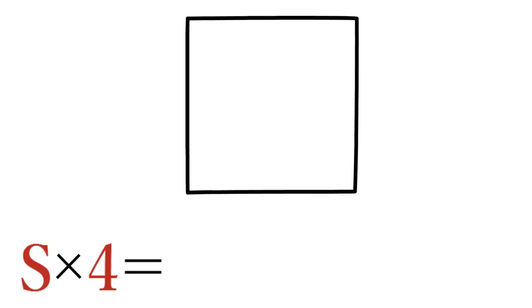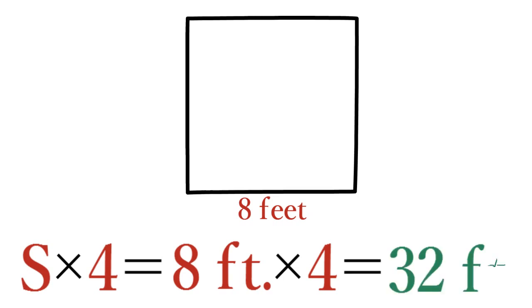So, to find the perimeter of a square whose side equals 8 feet, multiply 8 feet times 4, which equals 32 feet.